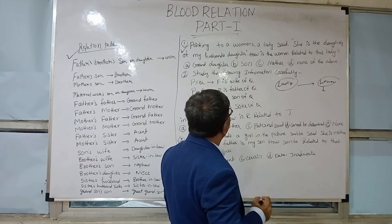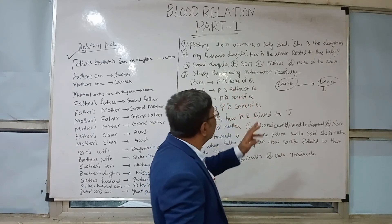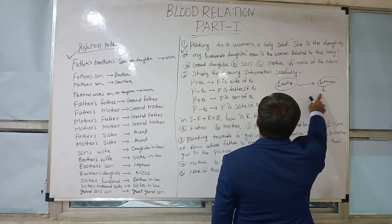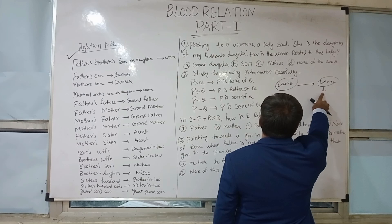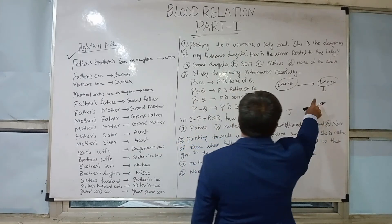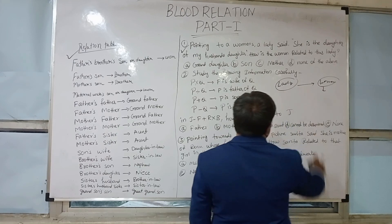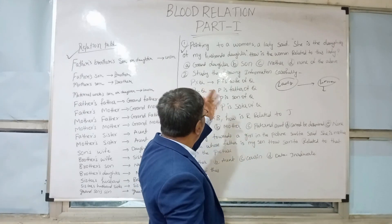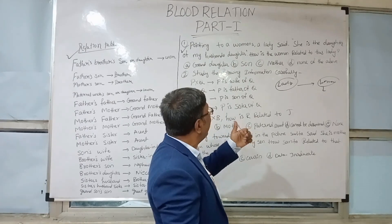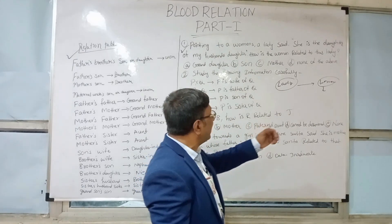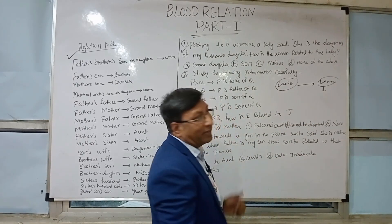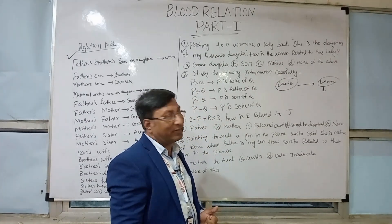The relation is: the woman is the granddaughter of this lady. Pointing to a woman, a lady said she is the daughter of my husband's daughter — that means daughter of husband's daughter is the lady's own daughter's daughter. So this is what is called granddaughter. So granddaughter is the correct answer for question one.